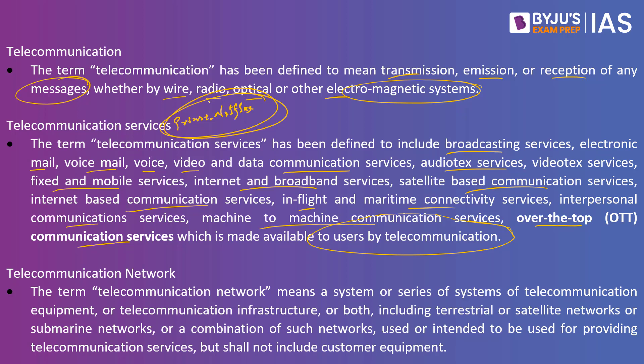Historically we did not have WhatsApp, Telegram, Signal, and similar platforms, but in the present era these new messaging platforms are also added as part of telecommunication services. The bill also defines 'telecommunication network' as a system or series of systems of telecommunication equipment or infrastructure, including terrestrial, satellite, or submarine networks, used for providing telecommunication services, but excluding customer equipment.